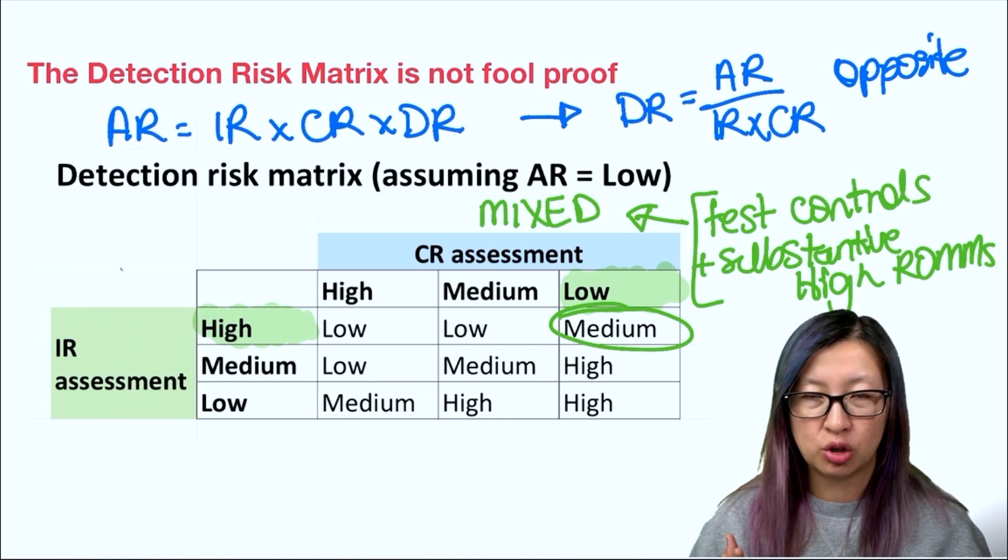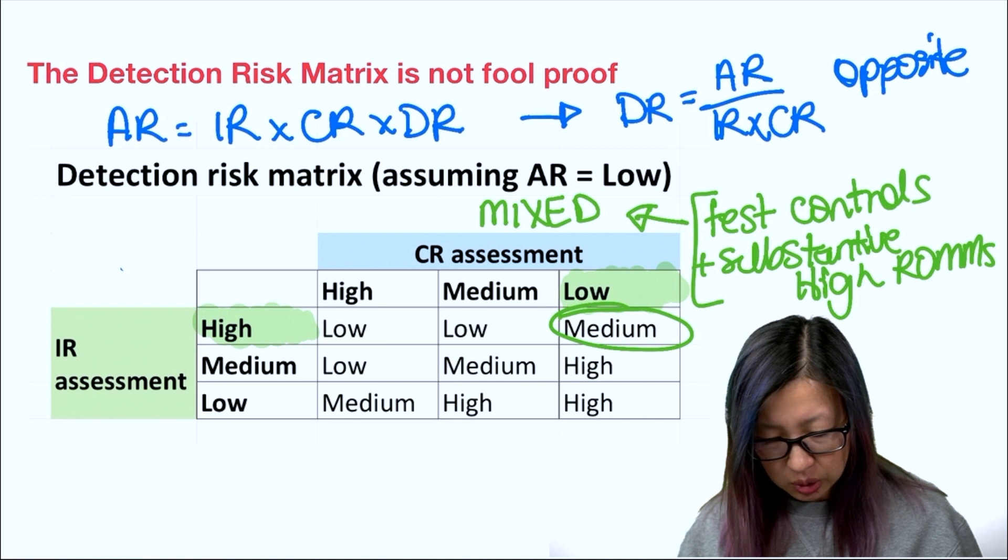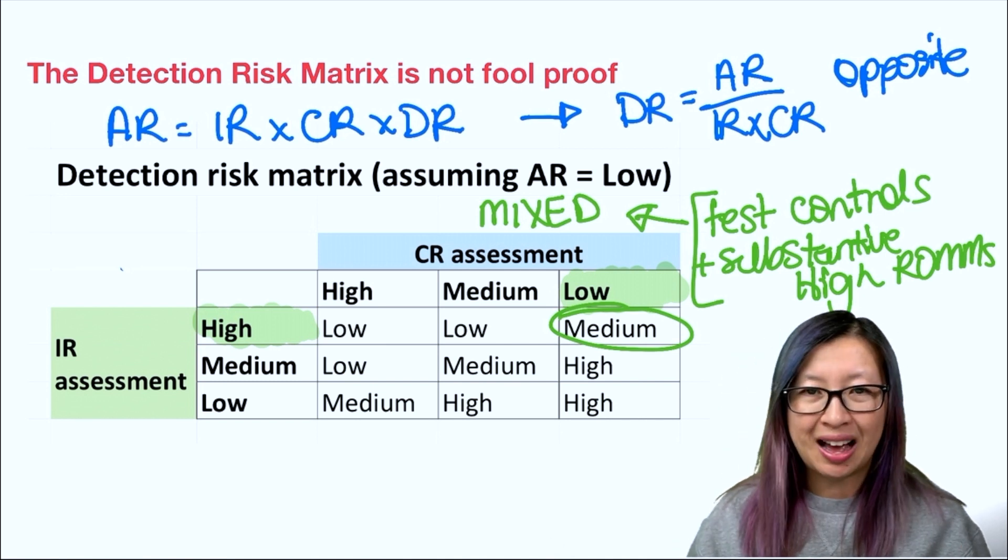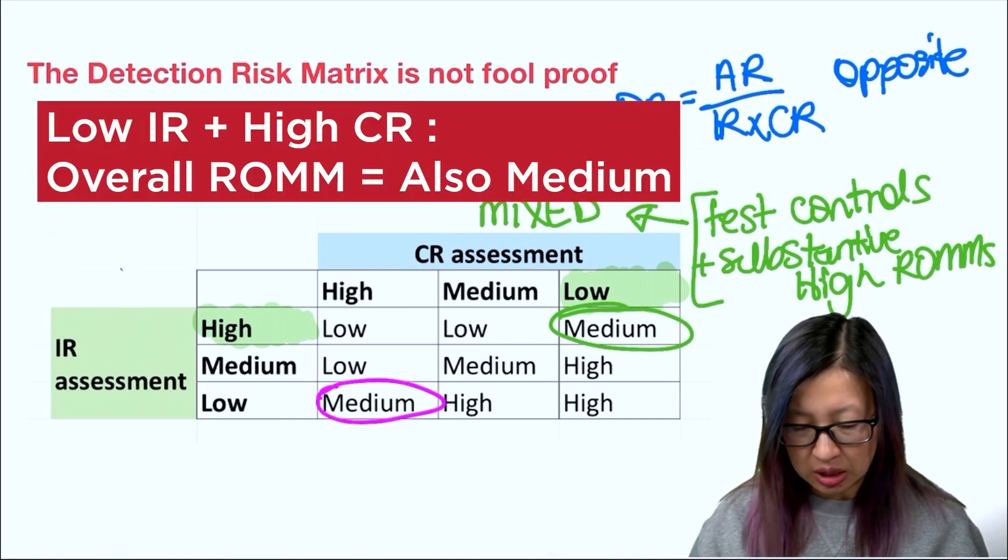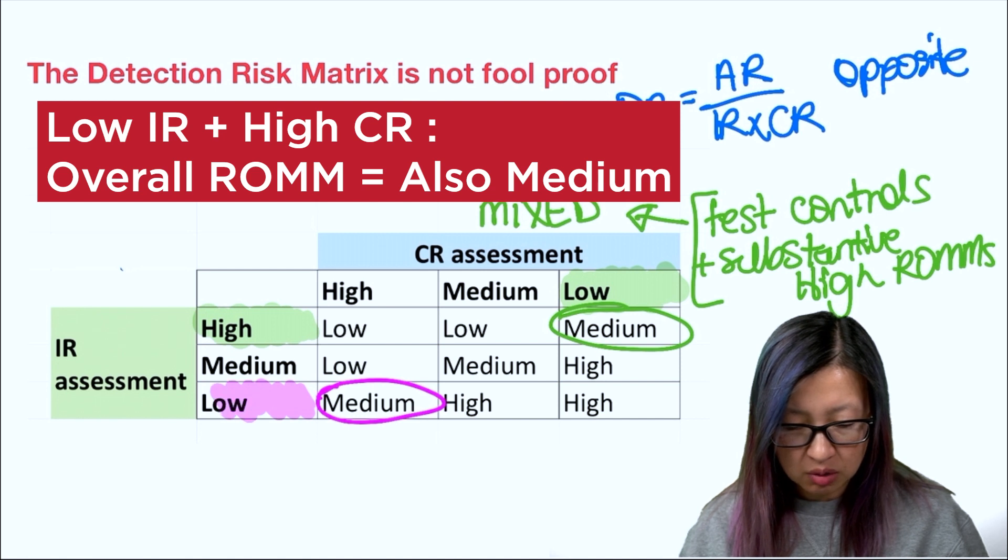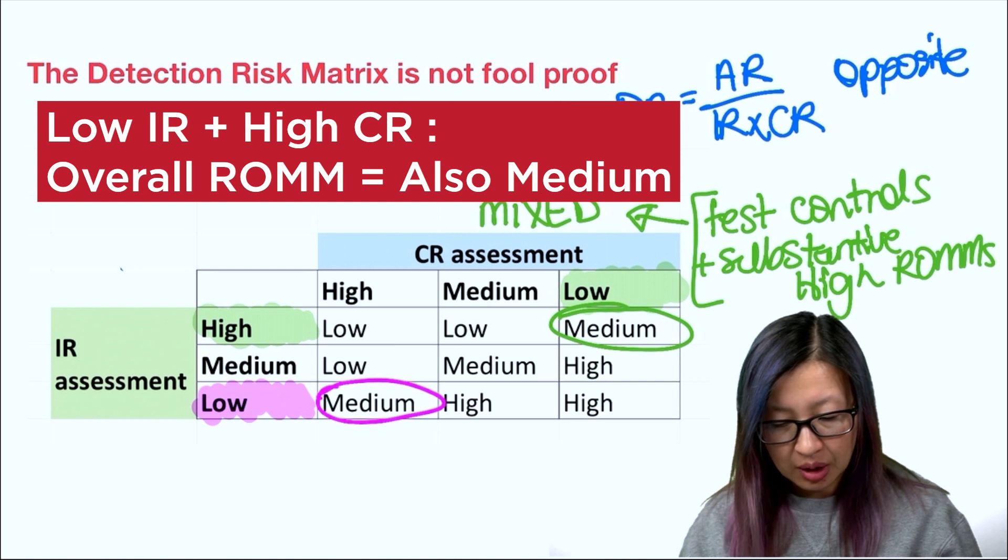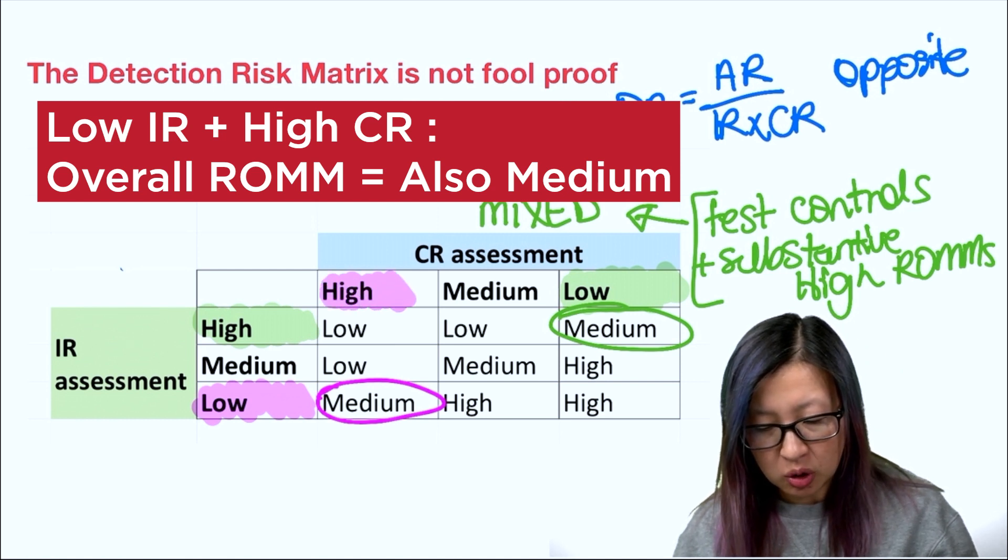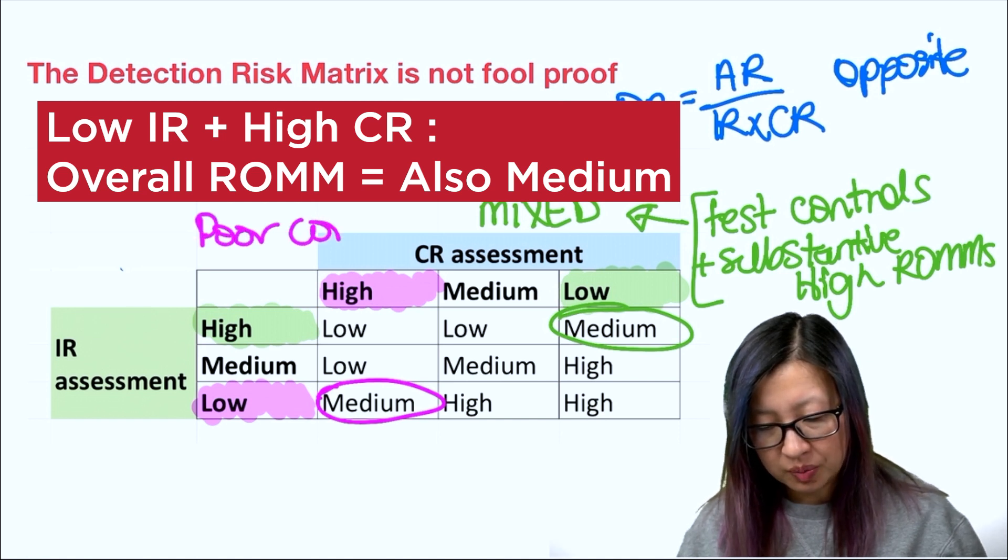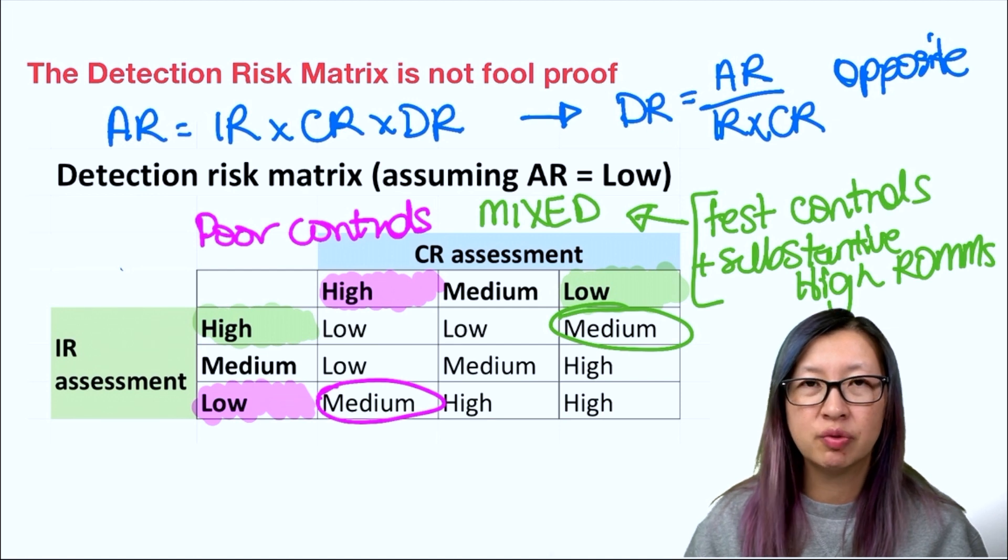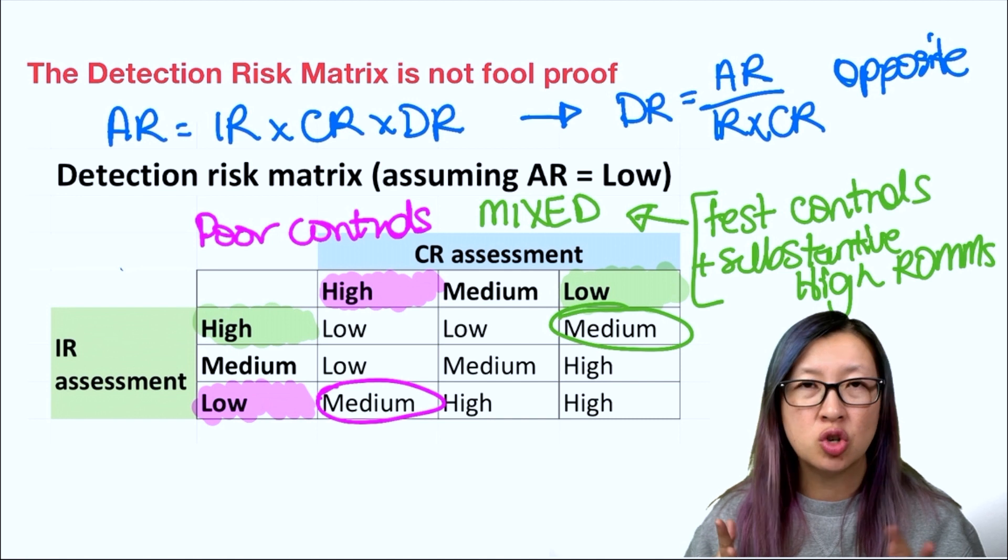However, let's look at medium on the other end of the spectrum. What do we get when we have medium down here in this bottom corner? We have low inherent risk, low risk industry, low risk client in terms of things going on, but the medium comes about because we have high control risk. We have poor controls. This is the system that's the cheese full of holes. It's not going to prevent or detect any material misstatements.